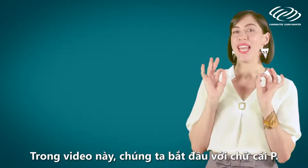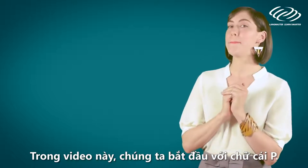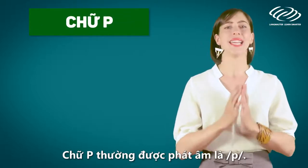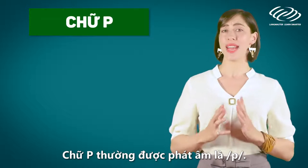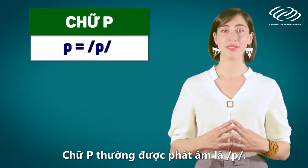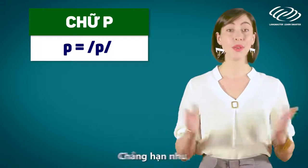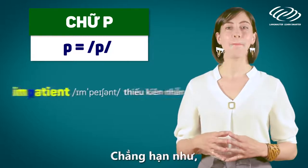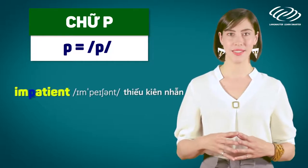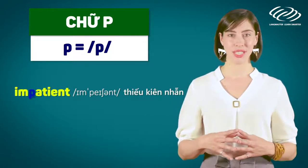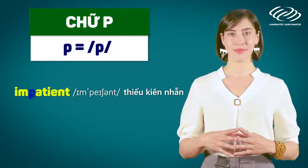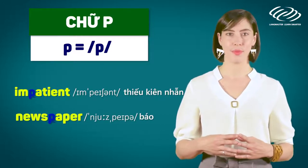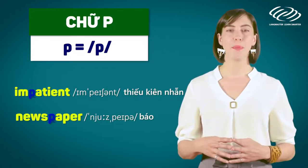we'll start off with the letter P. The letter P is often pronounced as /p/. For example: impatient, newspaper.